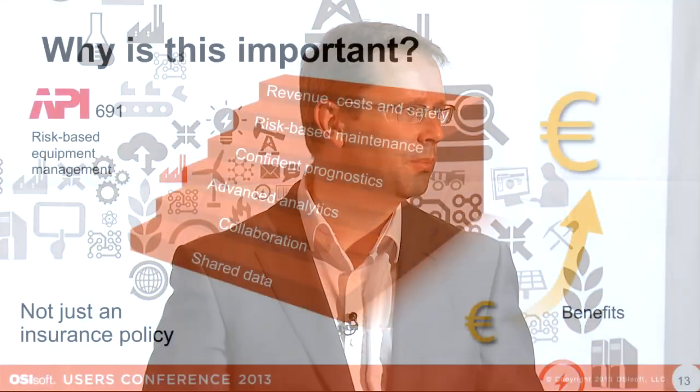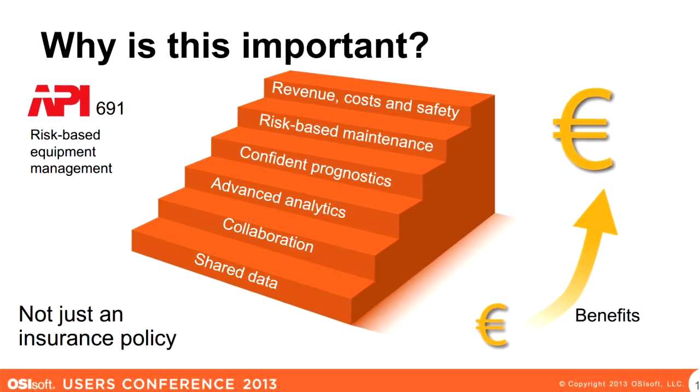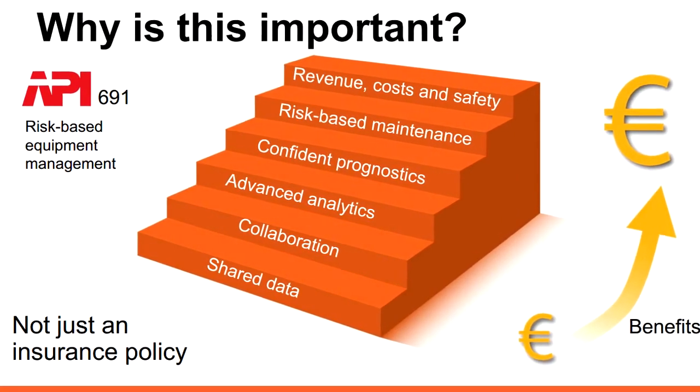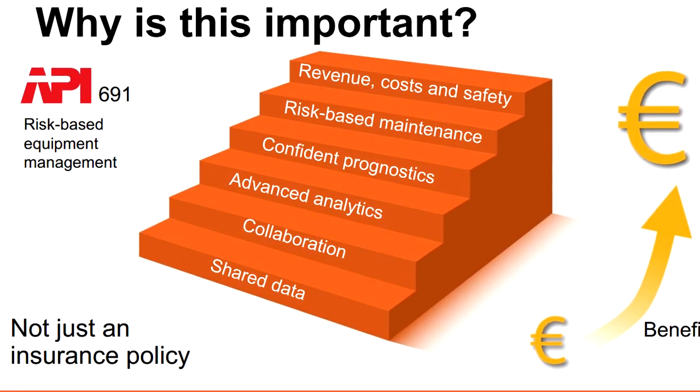Essentially the two teams are working on one data set. Ultimately we're trying to control revenue, cost, and safety in a challenging business environment. We can't do that until we become a risk-based business. We can't become a risk-based business unless we have a confident prognosis. We can't have a confident prognosis without advanced analytics. We can't have advanced analytics unless we collaborate. And we can't collaborate unless we share data. So that staircase takes me all the way back into Cloud Connect.